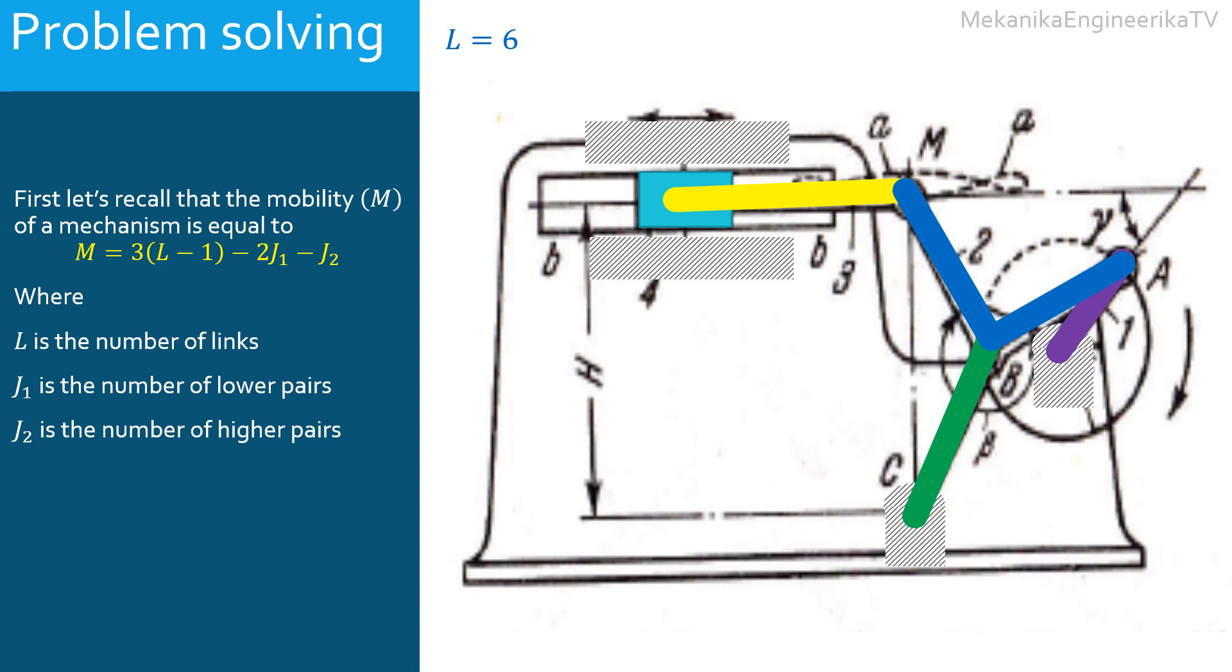This mechanism uses one translating joint that connects the slider and the ground. It also uses six rotating or revolute joints. One in E connecting the ground and the bar AE. One in C connecting the ground and the bar BC.